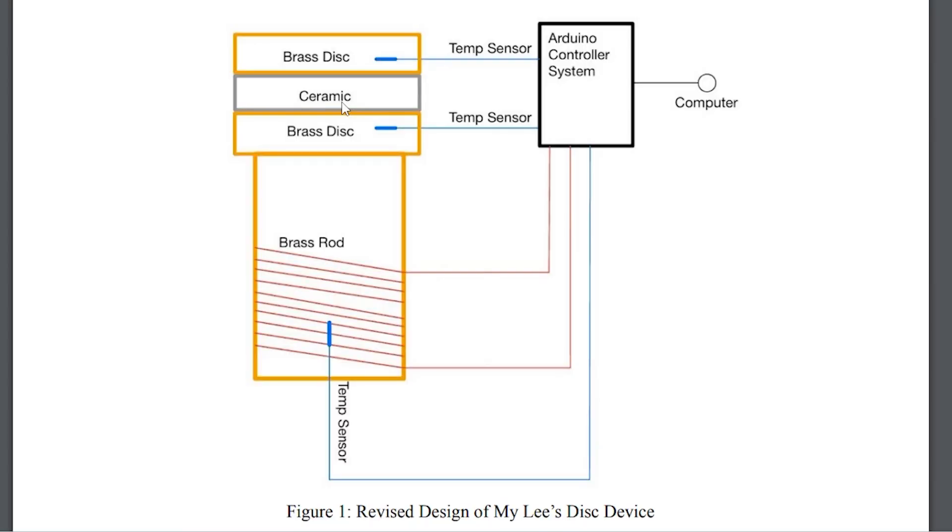It's fairly straightforward to measure the thermal conductivity of a material using a Lee's disk device. The basic working principle, shown in this diagram, uses two brass disks with your test material in between.